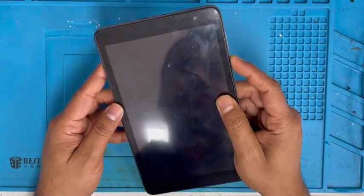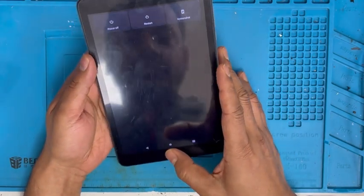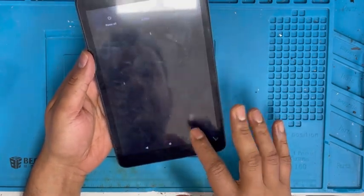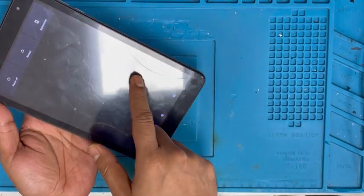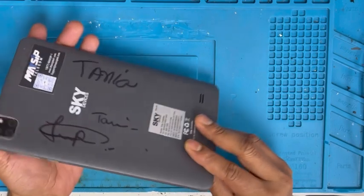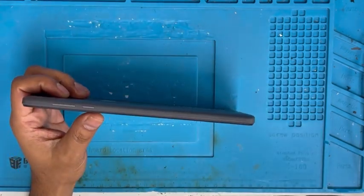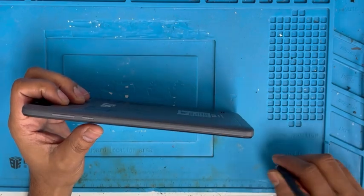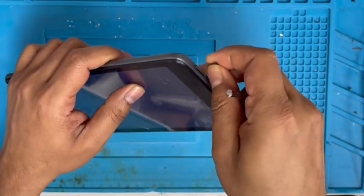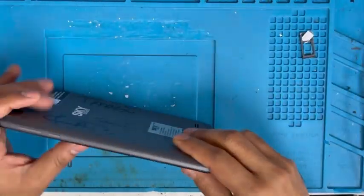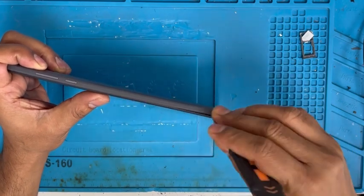Hi, here is a Sky Device Elite Octamax tablet. The touch is not working because this corner is a little bit cracked right here. That's why the touch screen doesn't work, so we have to replace the digitizer touch screen. I'm going to show you how to replace that. Let me open the back.